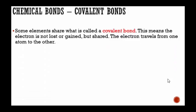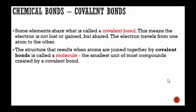Some elements share what is called a covalent bond. This means the electron is not lost or gained, but shared. This is why it's called a covalent bond, co. The electron travels from one atom to the other and it is shared.